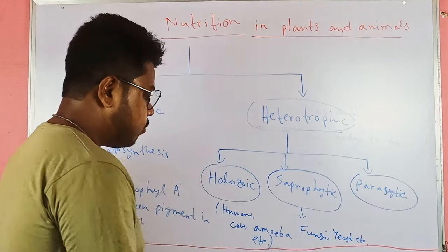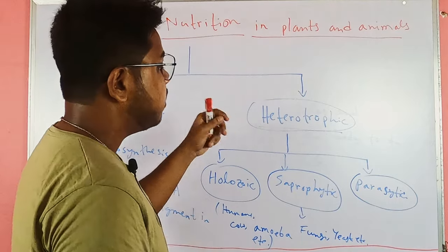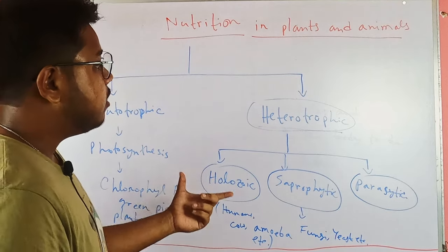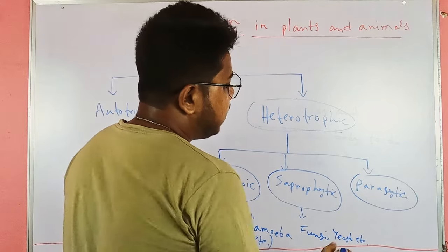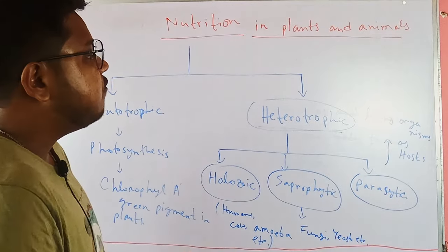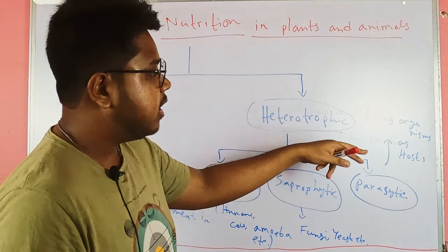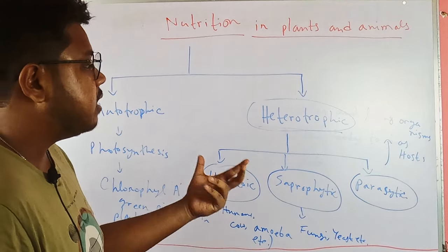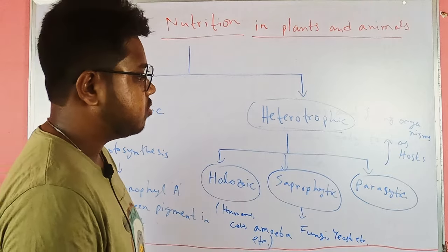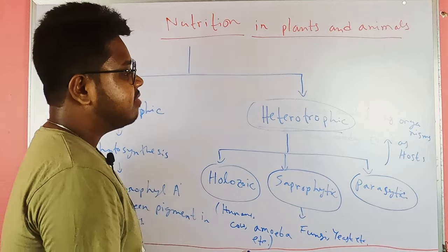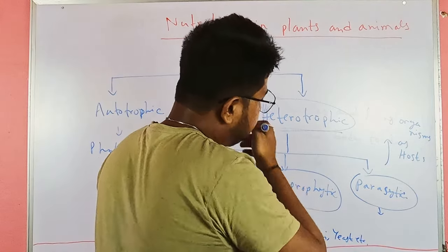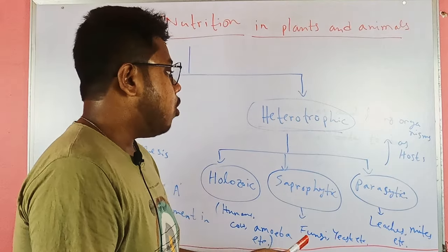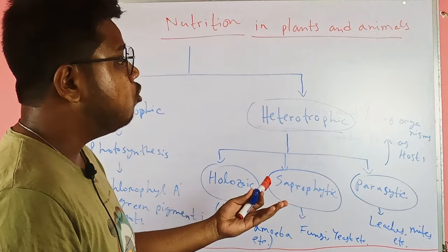Parasitic nutrition is a type of heterotrophic nutrition where organisms rely not on dead organisms but on living organisms, making them a host. They live within or outside the host and absorb nutrition and minerals from it. This involves leeches, mites, etc.